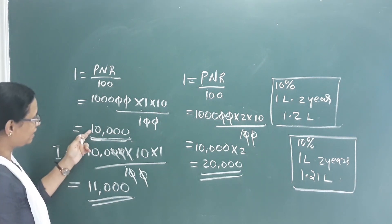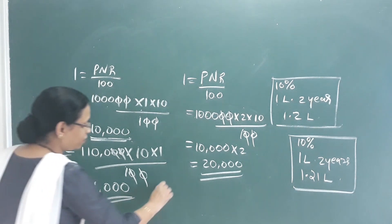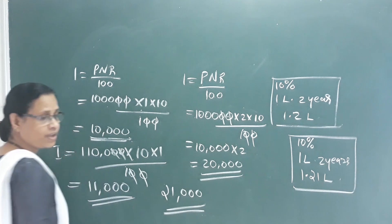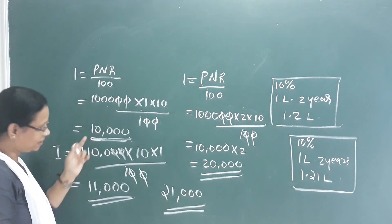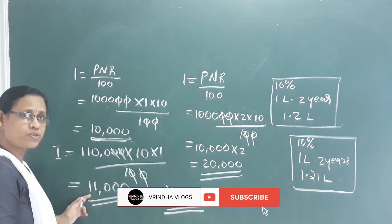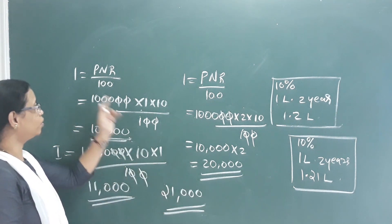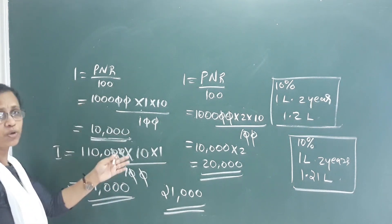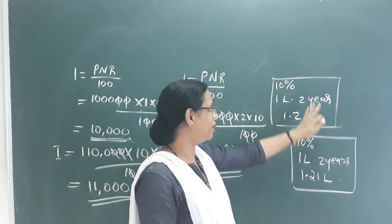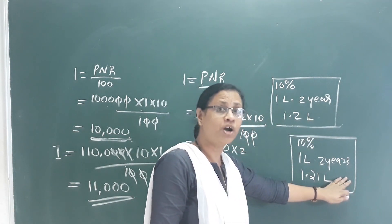Year one interest is 10,000 and year two interest is 11,000. If we add these, it is 21,000 rupees total interest. So with compound interest we get 1 lakh plus 21,000, which equals 1,21,000 rupees. That is why the second bank pays compound interest, not simple interest.